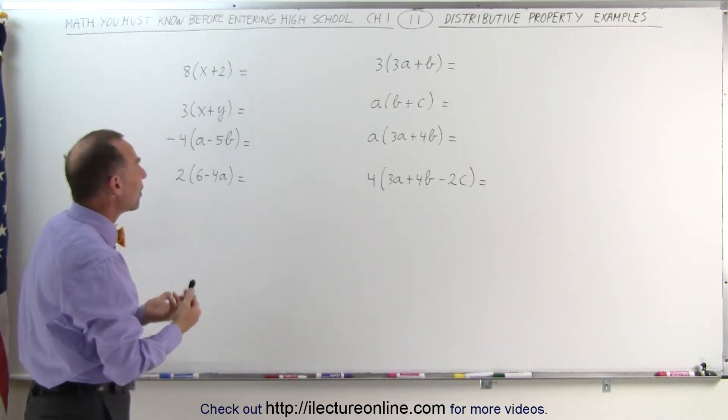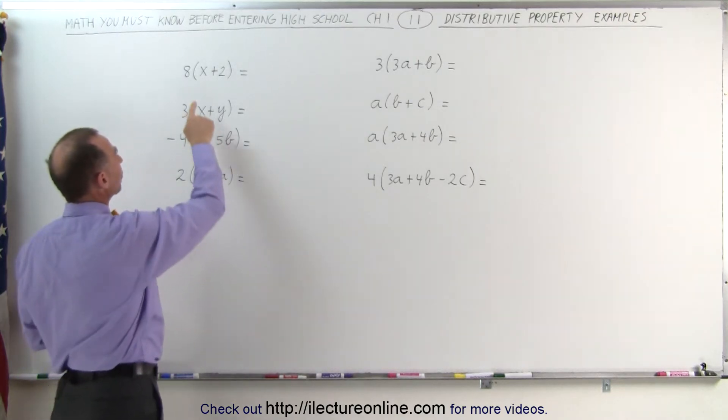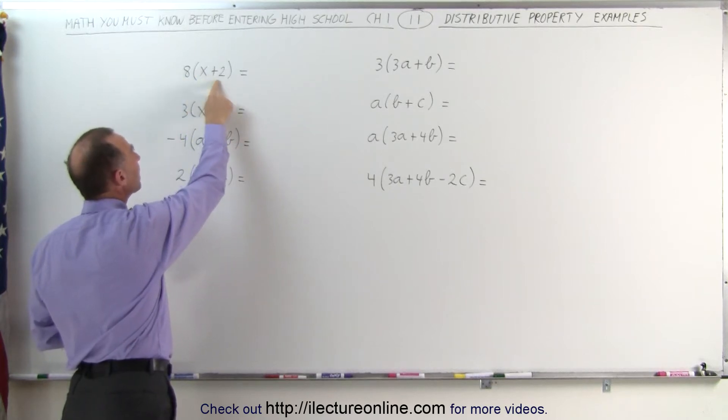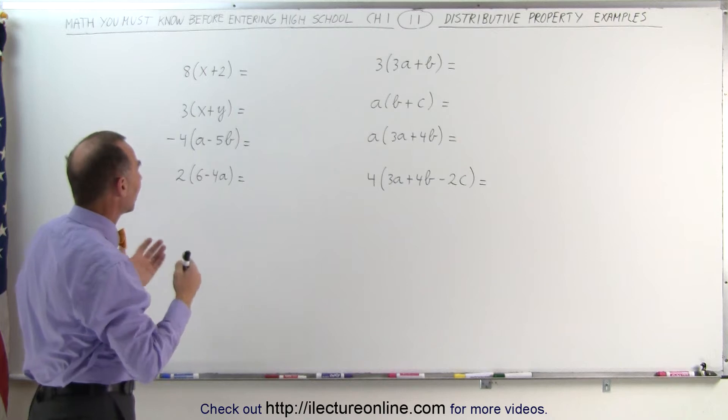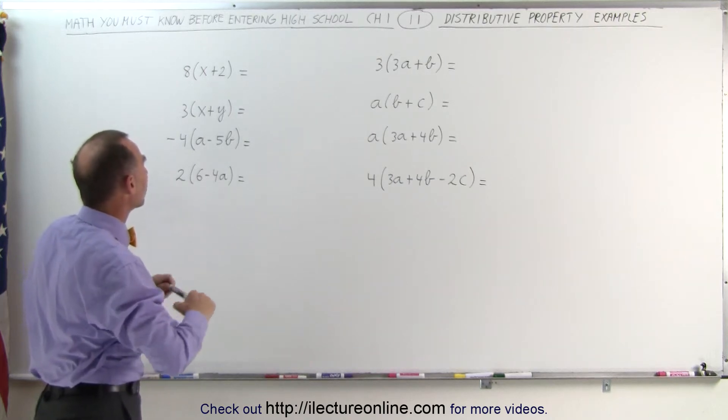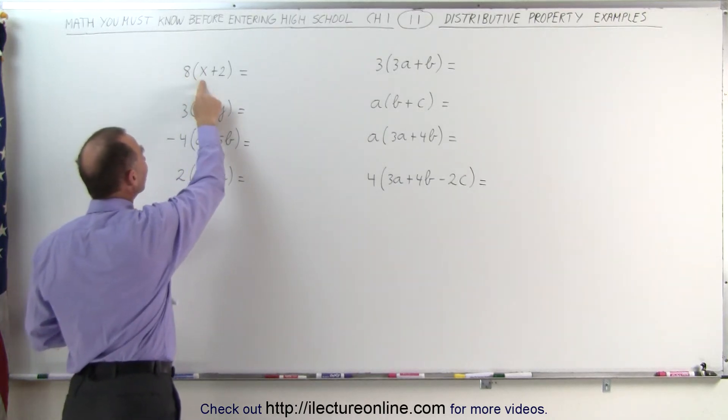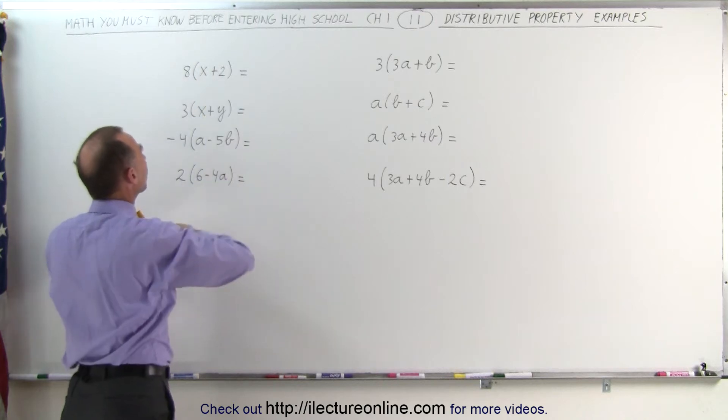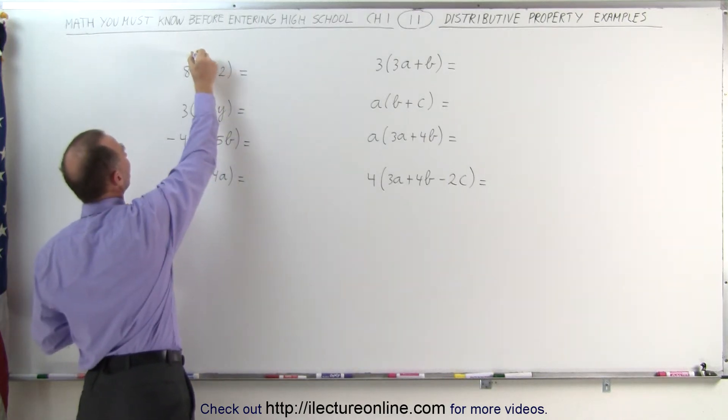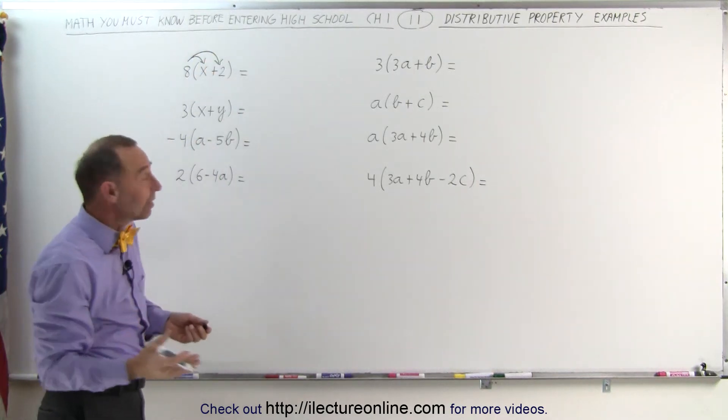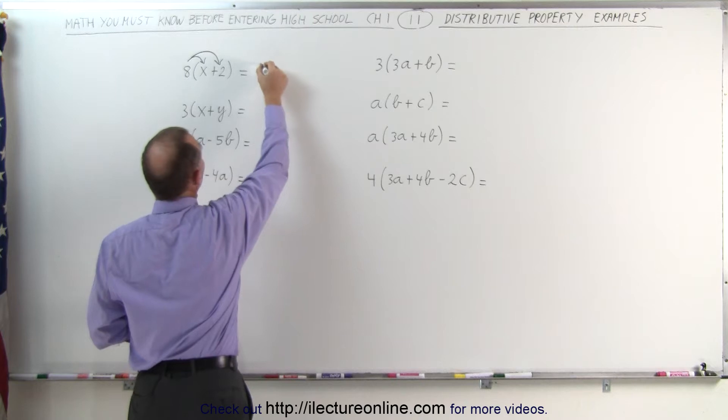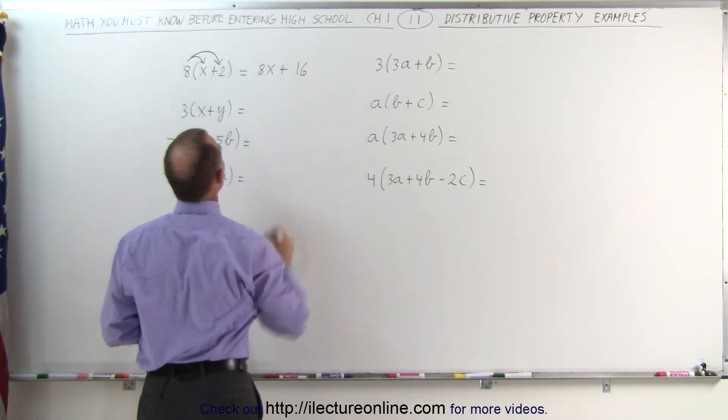Well, the distributive property tells us that we must multiply this number eight times each of the terms inside that parentheses, each of the terms of the binomial, which means we multiply eight times x and eight times two. Sometimes it helps to draw little arrows like this, so we indicate that we're going to multiply eight times x and eight times two. Eight times x is eight x, and eight times two is equal to 16.